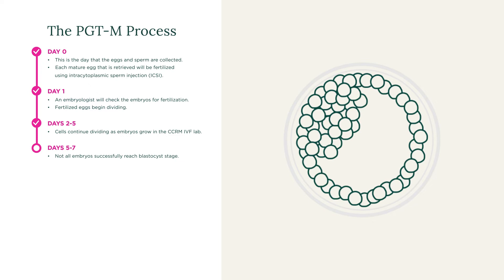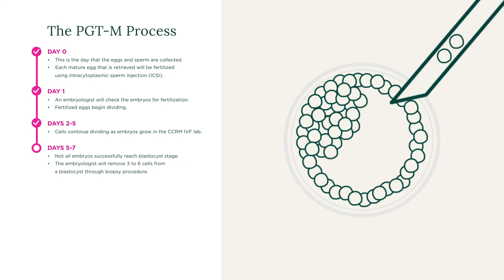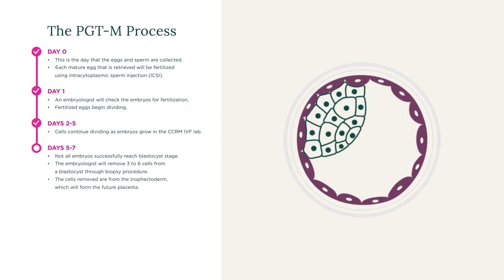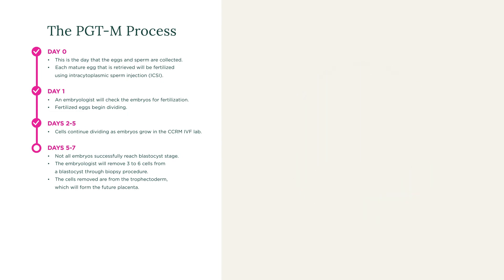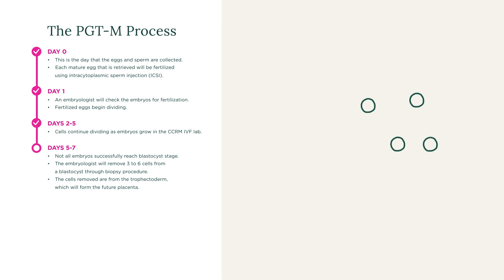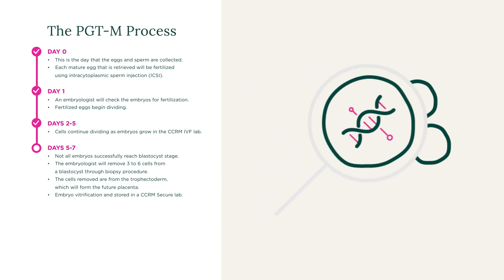When an embryo does reach the blastocyst stage, the embryologist will remove three to six cells from the embryo through biopsy. The embryonic cells that are removed are called trophectoderm cells, which are the cells that will form the future placenta. Cells are never removed from the inner cell mass — these are the cells that will form the future fetus. The risk of damage to the embryo is very rare, occurring less than one percent of the time. The biopsy cells are then analysed by the genetics lab for chromosome enumeration and the specific inherited gene mutations in your family.